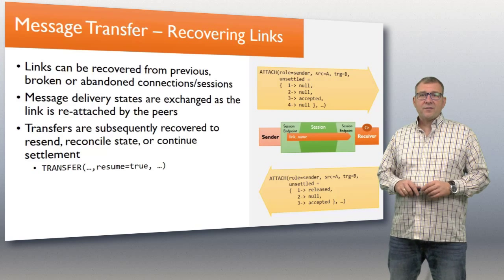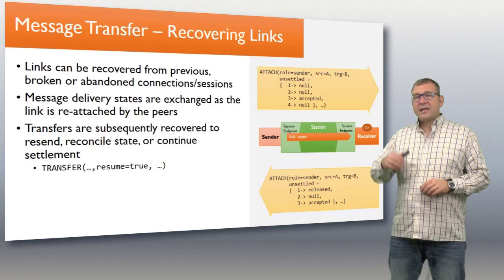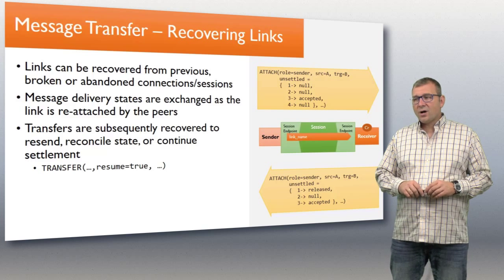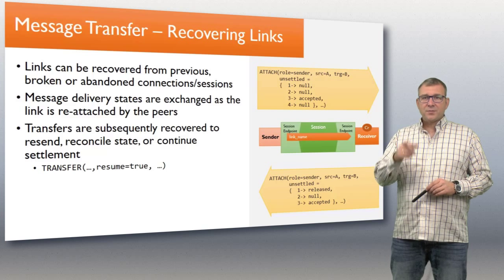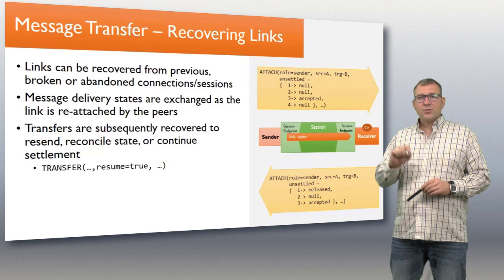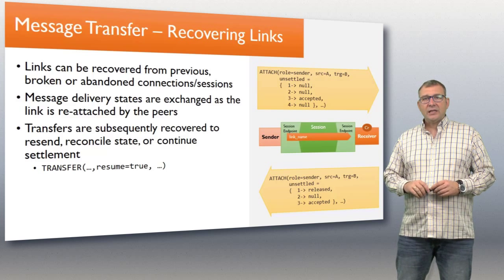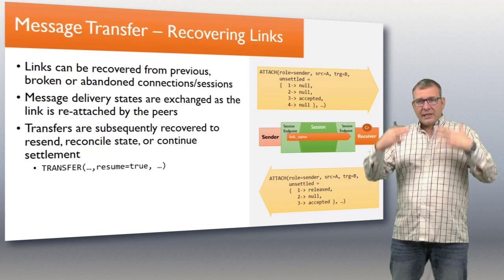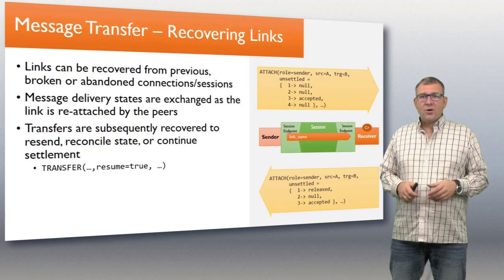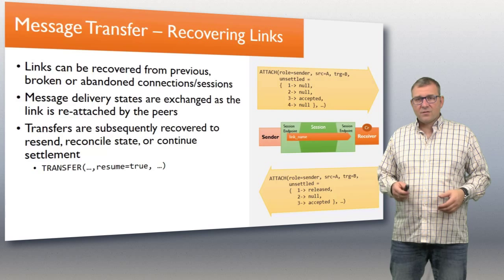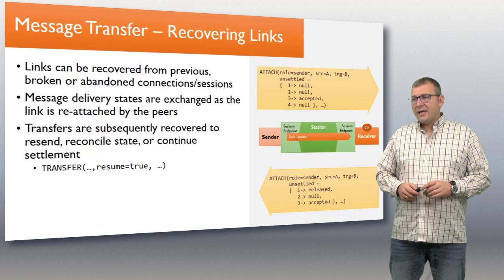There's a negotiation that happens during the link recovery where the states of all messages still in the buffer are reconciled. Then in the end, you are effectively resuming the transfers and resuming the dispositions cleanly by clearing all the buffers out based on the now known states. That's how link recovery works in AMQP.